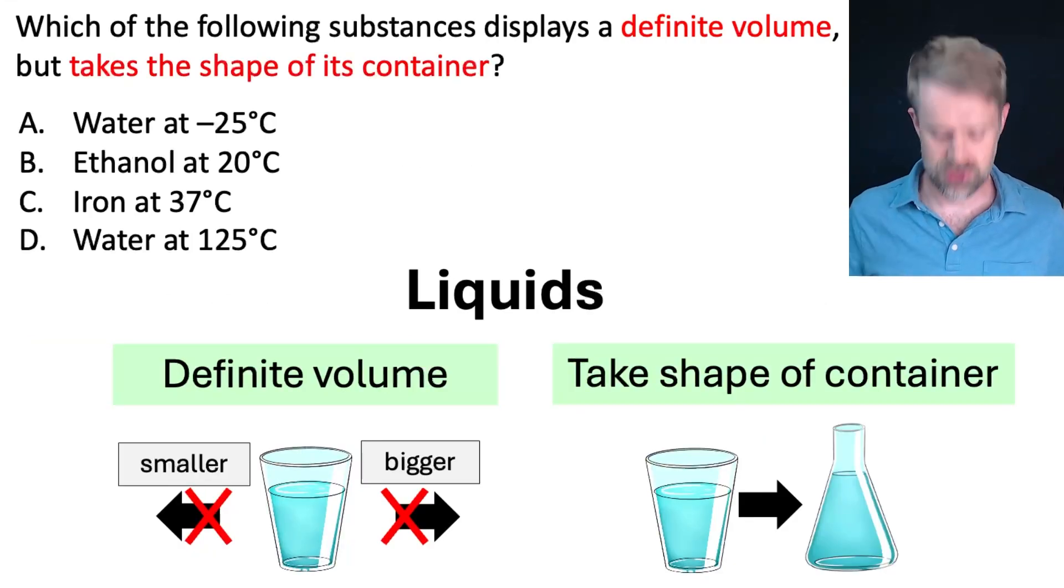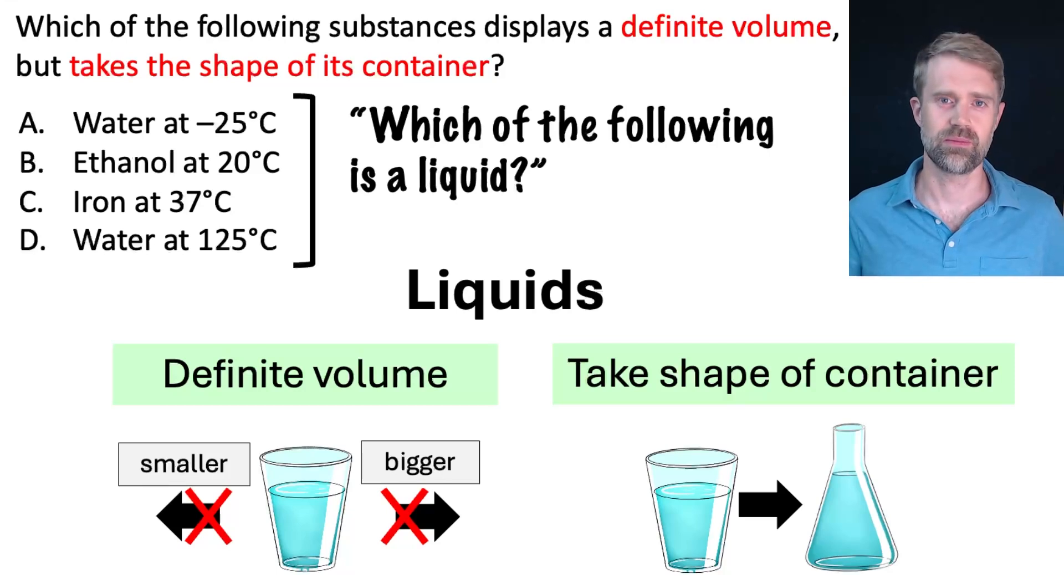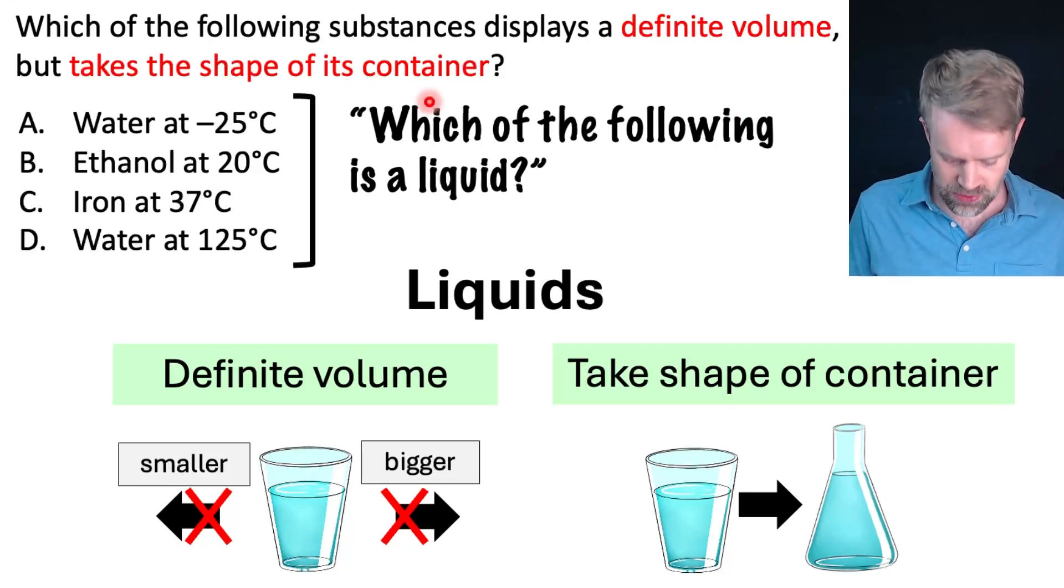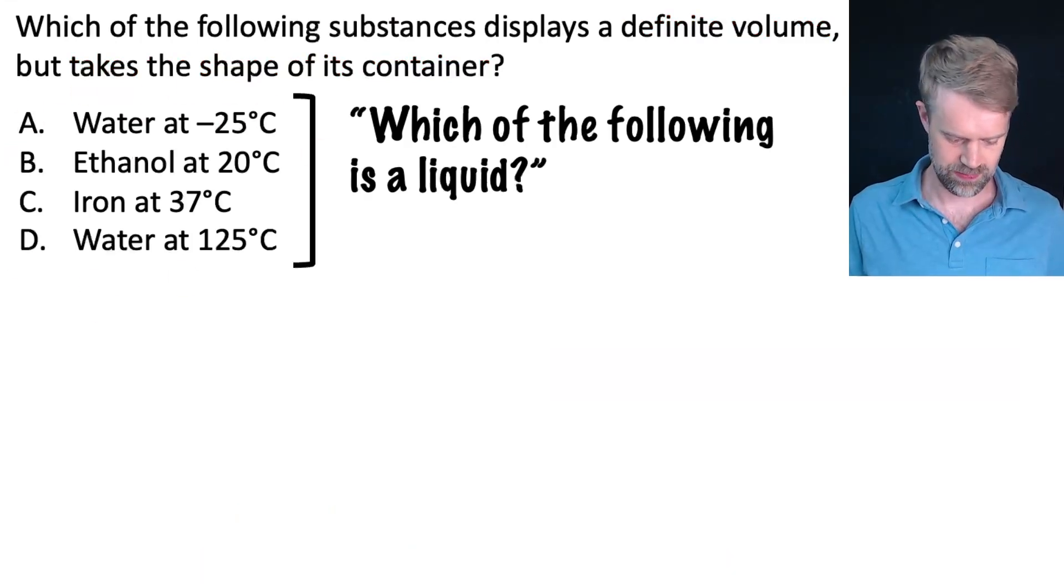So, if we're looking for something with definite volume that also takes the shape of its container, we're talking about a liquid. In other words, this question is really asking which of the following is a liquid. So now we've got to look at these four choices and figure out which one is a liquid. You'll notice that they give us different chemicals and they also give us different temperatures.